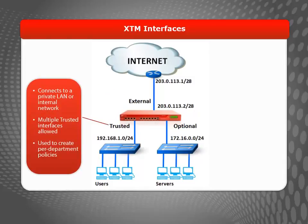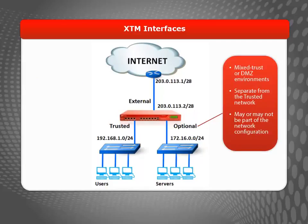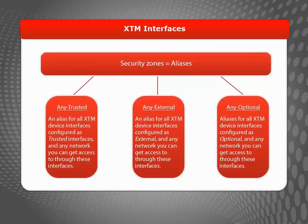A trusted interface connects to your company's private LAN or internal network. You can have multiple trusted interfaces, which can help you set up per-department policies — for example, a trusted interface for your HR network, one for your executive network, another for your IT staff, and so on. Optional interfaces are often used as mixed trust or DMZ environments separate from your trusted network. Resources typically found on an optional interface include public web servers, email servers, and FTP servers, all of which you want to protect. The name of each interface also acts as an alias you can use to define your firewall policies, including, for example, any-trusted — an alias for all networks behind the trusted interface.